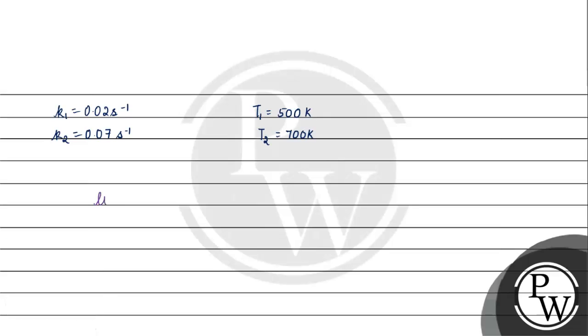We have log K2 by K1, which is 0.07 by 0.02, equals Ea by 2.303 into 8.314 joule per kelvin per mole, into 1 upon T1, which is 1 upon 500 minus 1 upon T2, minus 1 upon 700. The log of this will be 7 by 2, which is 3.5.